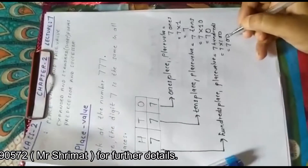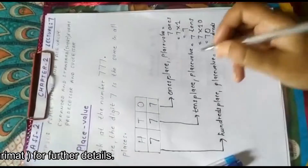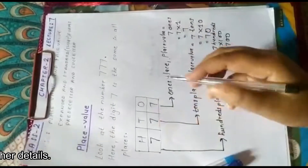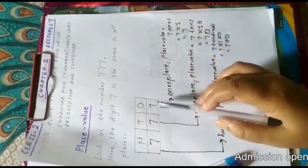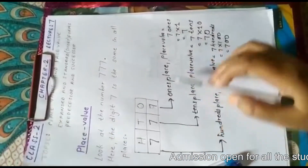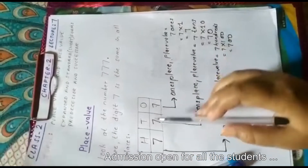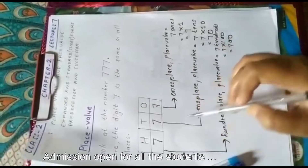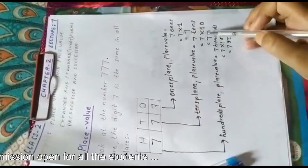You can see here that each 7 has a different place value. 7 at ones place has a place value of 7. 7 at tens place has a place value of 70. And 7 at hundreds place has a place value of 700.